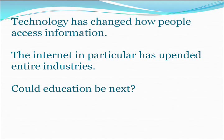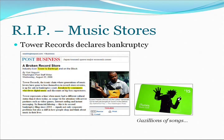Let's begin by talking about technology being a game-changer. Technology has changed how people access information. The internet, in particular, has upended entire industries. The question is, could education be next? Let's look at some examples. We can point to music stores — here's an item about Tower Records declaring bankruptcy back in 2006, because of online music services like Napster at the time, and now iTunes and the iPod. Music is just much easier to download and pay for.